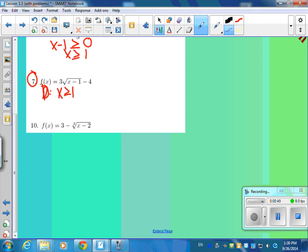When we do the inverse of this, we're going to get x equals 3 root of y minus 1 minus 4, and we're solving for y. What are you going to do first? Tell me algebraically what you're going to do. Plus 4, x plus 4. Solving for y, what do I want to do next? Divide by 3, so you get x plus 4 divided by 3.